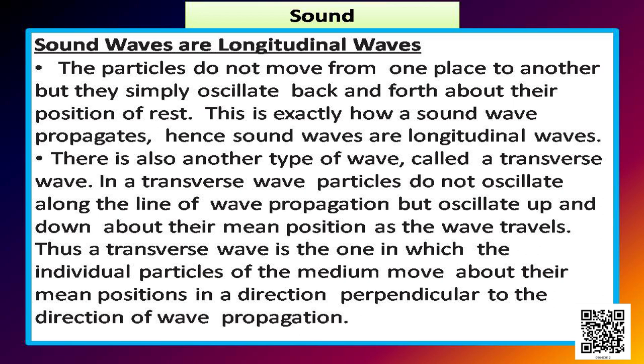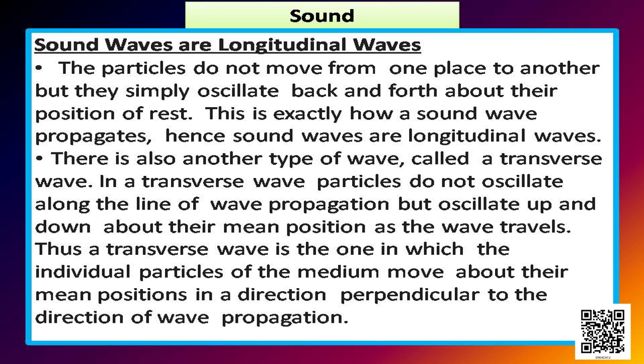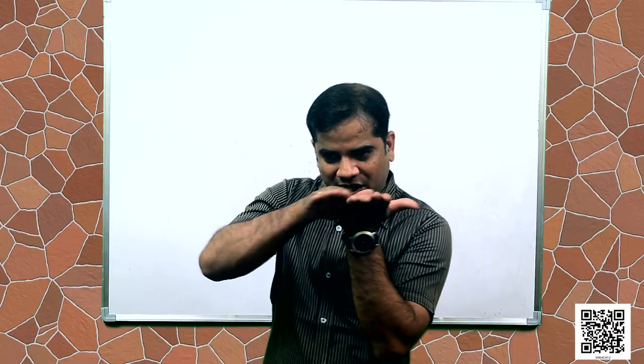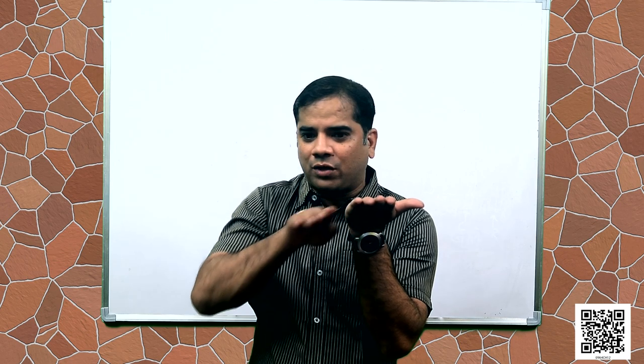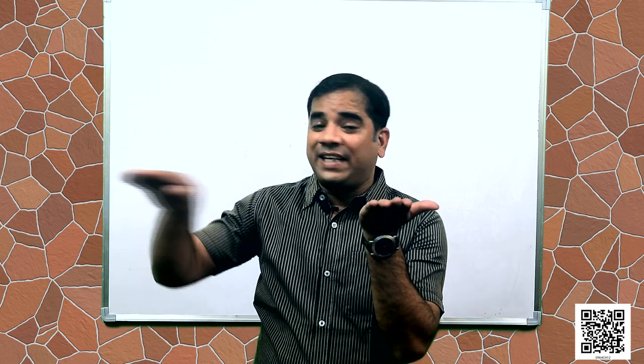There is also another type of wave called a transverse wave. In a transverse wave, particles do not oscillate along the line of wave propagation but oscillate up and down about their mean position. A transverse wave is one in which the individual particles of the medium move about their mean position in a direction perpendicular to the direction of wave propagation.